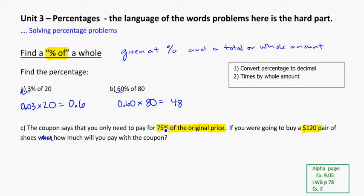Same process: convert 75 to a decimal, 0.75. Times it by 120, because I want to know what 75% of 120 is. This becomes 90. Since it's a word problem, we can talk about it in units. That's $120 for a pair of shoes, but at 75%, I only pay $90 instead.